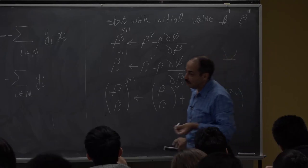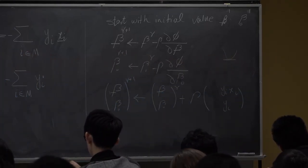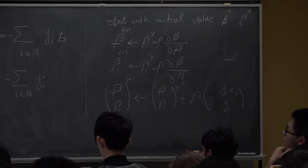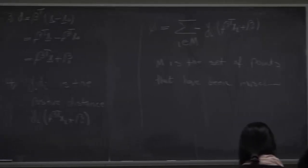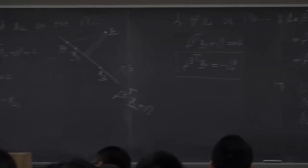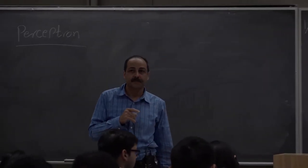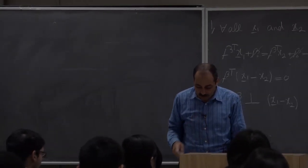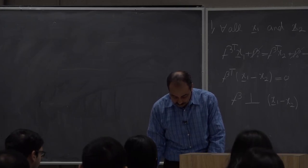Stochastic gradient descent is quite an important method in neural networks. All real neural networks basically use stochastic or mini-batch gradient descent instead of full gradient descent, because computing the full summation is computationally expensive.